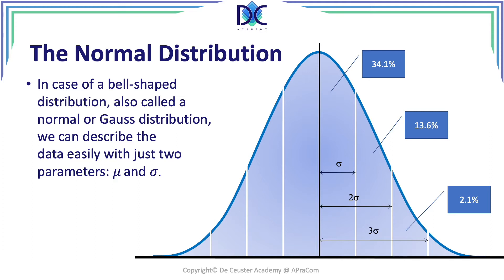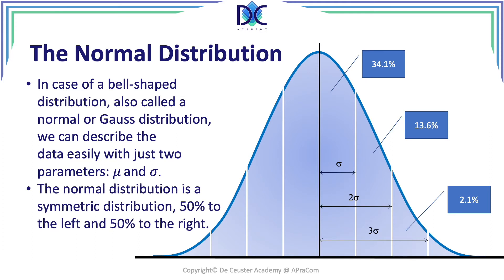What you see here is a symmetrical distribution. It means that the surface to the left and to the right of the average is exactly 50%. We have the average as the black line, and then three intervals, each one sigma further to the left or to the right. Between the average and one standard deviation we find 34.1 percent.